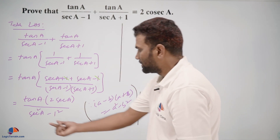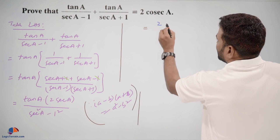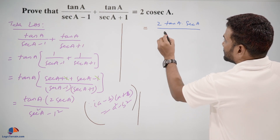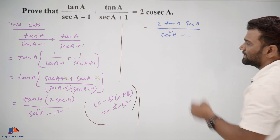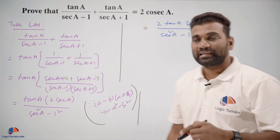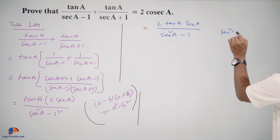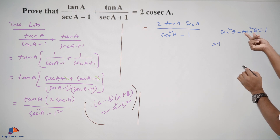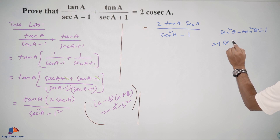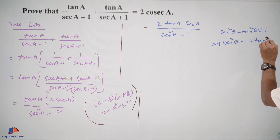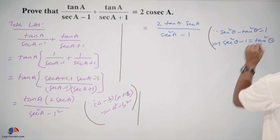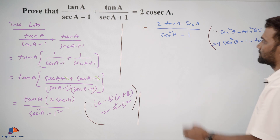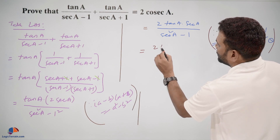This can be rewritten as 2 times tan A times secant A, upon secant squared A minus 1. By the known trigonometric identity, secant squared theta minus tan squared theta equals 1, which gives us secant squared theta minus 1 equals tan squared theta. So we replace secant squared A minus 1 with tan squared A.